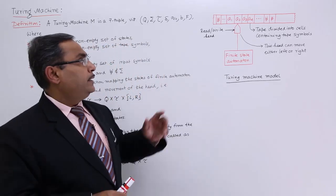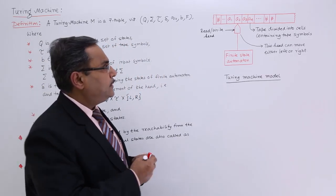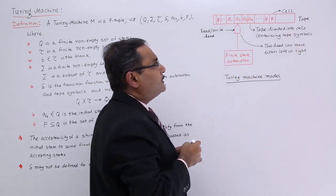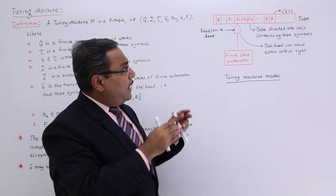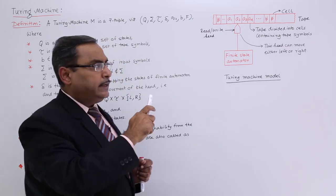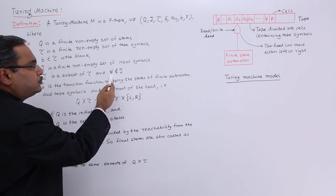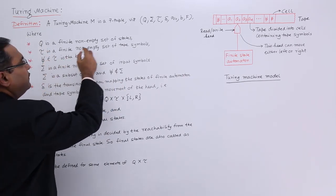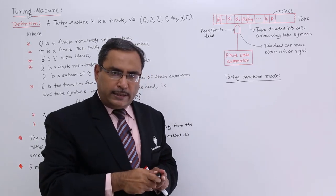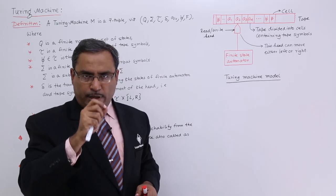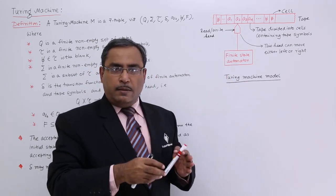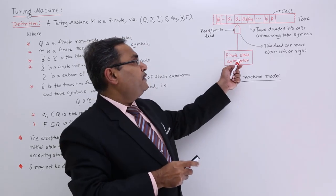Let me show this with a diagram. Here you can see there is a tape with cells. The tape has finite length and each cell contains some symbol. In tau, the blank is also allowed. So suppose the input string is a1, a2, a3, a4 — input string characters can be tape symbols, but the input string cannot contain blank space.